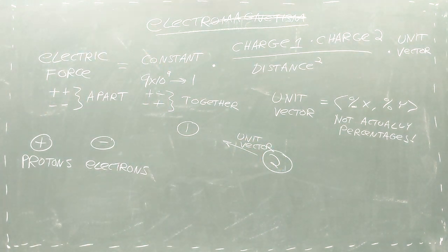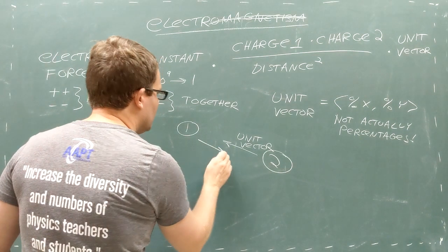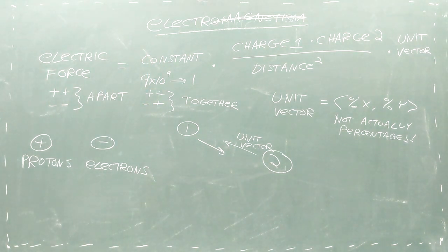When we want to reverse the process and calculate the force that object 1 exerts on object 2, the only piece that changes is this unit vector, which will then point in the opposite direction.